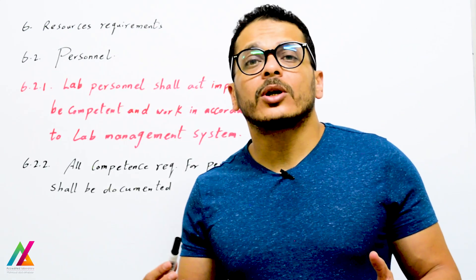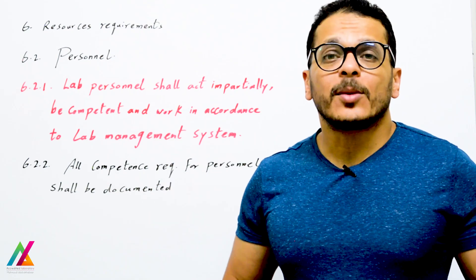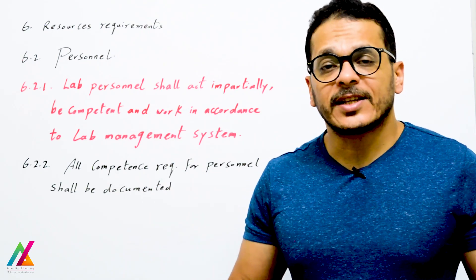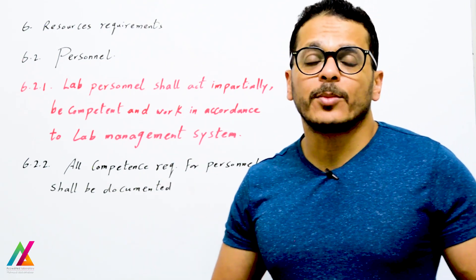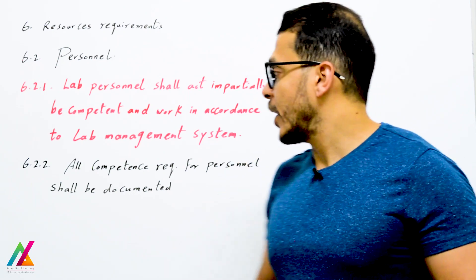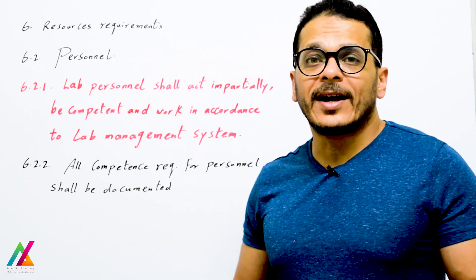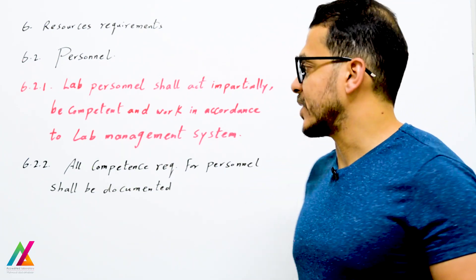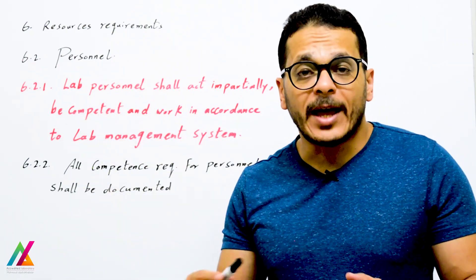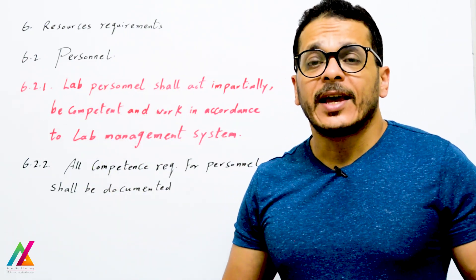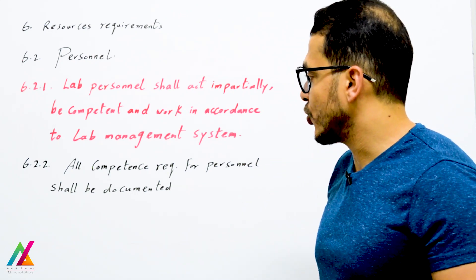Lab personnel shall act impartially — that's explained in detail in general requirements. They shall be competent and work in accordance with the lab management system, be competent enough to perform their lab activities, and be able to get valid results within an acceptable range.